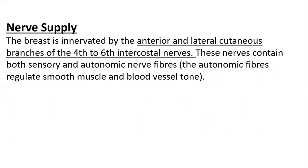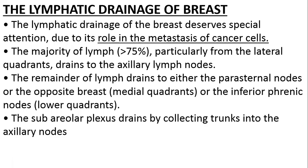Looking at nerve supply, the breast is innervated by the anterior and lateral cutaneous branches of the second through sixth intercostal nerves. Intercostal nerves are present around the ribs, and their anterior and lateral cutaneous branches supply the human breast tissue. The main lymphatic drainage of the human breast is to the axillary lymph nodes, though it can also drain to the parasternal nodes, nodes of the opposite breast, or the subphrenic nodes.